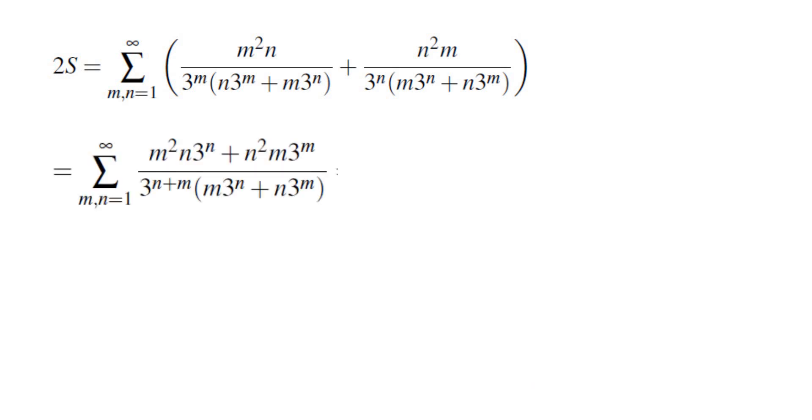When I take the common denominator, I'm going to end up with 3 to the power of n plus m at the bottom, parentheses m times 3 to the power of n plus n times 3 to the power of m. In the numerator I'm going to get m squared n times 3 to the power of n plus n squared m times 3 to the power of m.